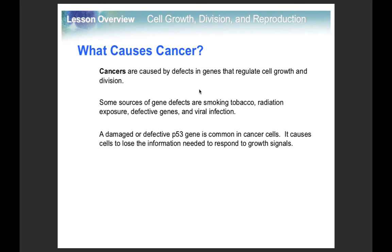Cancer can basically be any defect in genes that help regulate cell growth, and that can come from drugs, radiation, or defective genes. You can have a defective p53 gene, which is very common in cancer cells. You can actually test for this, but you shouldn't unless cancer is a significant factor in your family history.